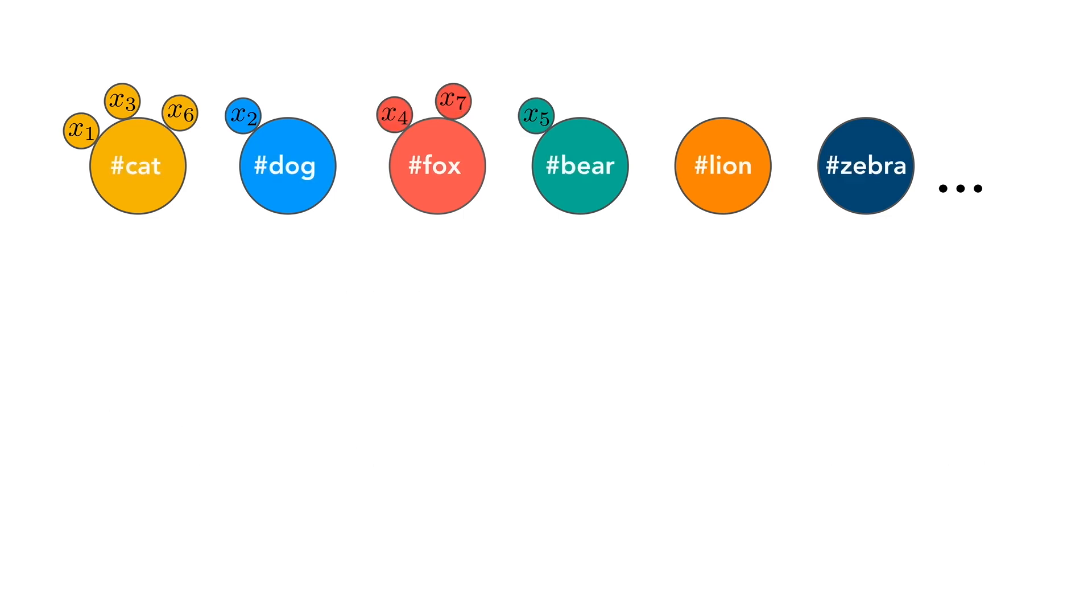In this analogy, each table represents a unique type, and each person joining the restaurant and sitting at the table represents a token streaming in and taking on a specific type.